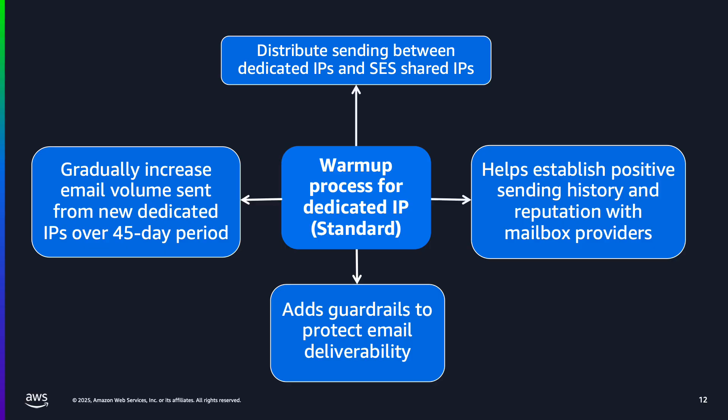The warm-up period helps establish a positive sending history and reputation with mailbox providers before ramping up to higher volumes. For standard dedicated IPs, Amazon SES offers an automatic warm-up feature that is enabled by default. SES gradually increases the number of emails sent from your new dedicated IPs over a 45-day period by distributing your email sending between your dedicated IP addresses and SES shared IPs. If you have existing dedicated IPs that are already warmed up, SES will distribute your email sending between those and any new dedicated IPs, gradually increasing the volume on the new IPs. This warm-up process adds guardrails to protect your email deliverability. During the warm-up, it's important to send high-quality emails to establish a good reputation with mailbox providers. If the traffic you send during warming up has any negative sentiment from recipients, this can have an impact on warming up the IP over time.